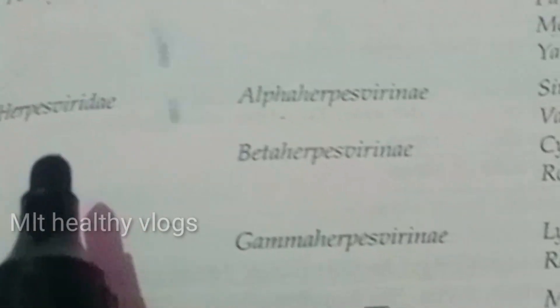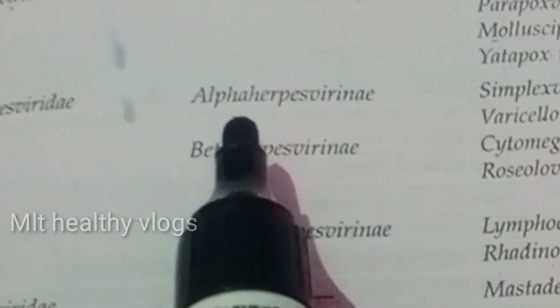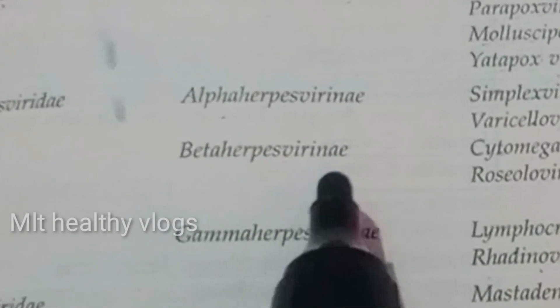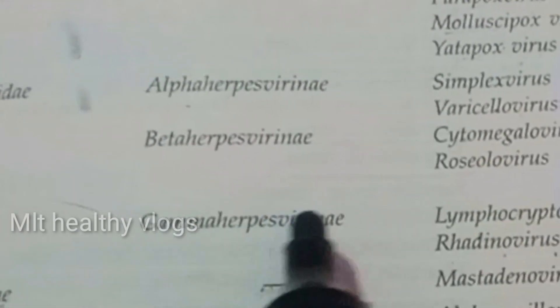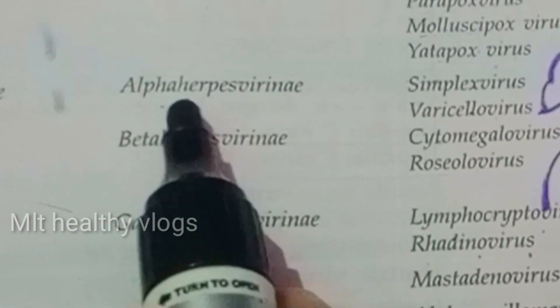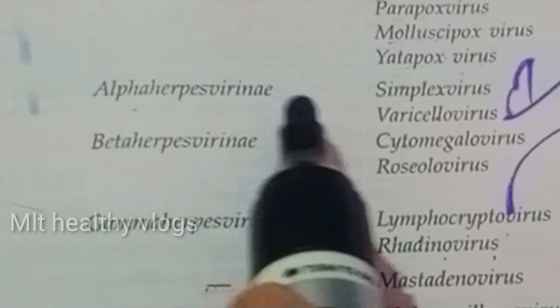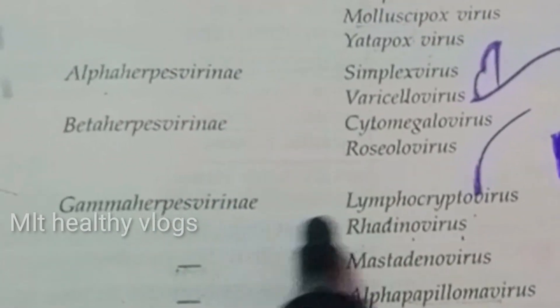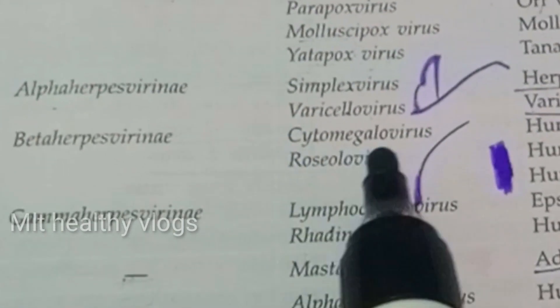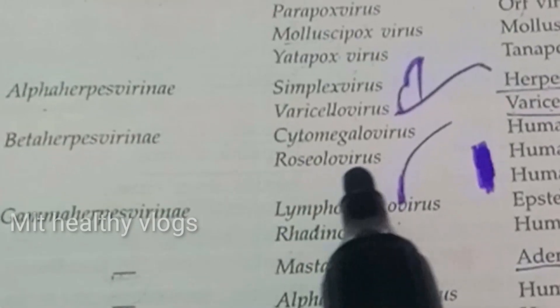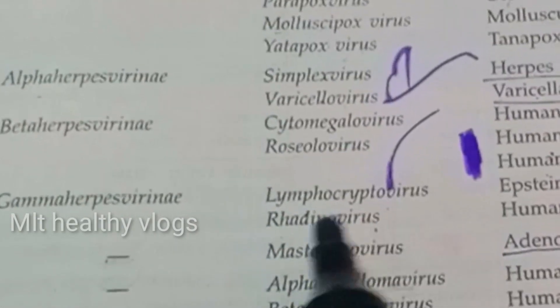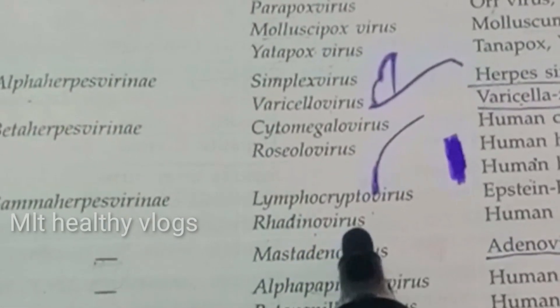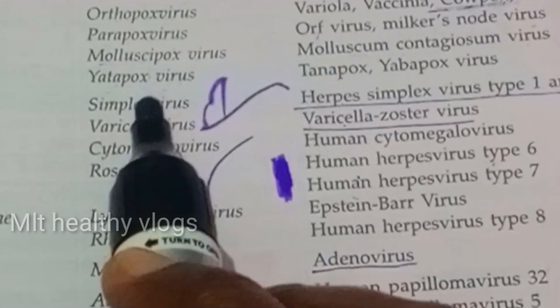The second family is Herpesviridae. The subfamilies are Alphaherpesviridae, Betaherpesviridae, and Gammaherpesviridae. Under Alphaherpesviridae there are two genera: Simplexvirus and Varicellovirus. Betaherpesviridae has Cytomegalovirus and Roseolovirus. Gammaherpesviridae has Lymphocryptovirus and Rhadinovirus.